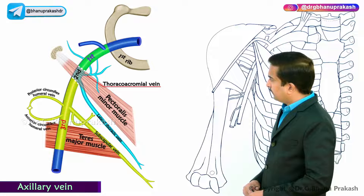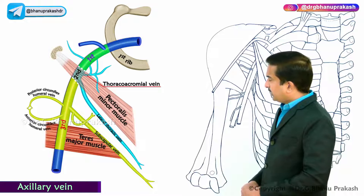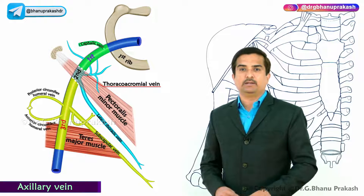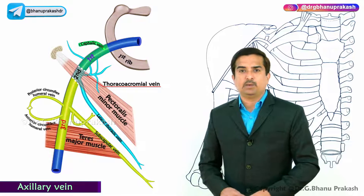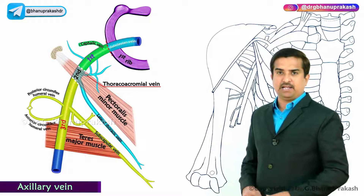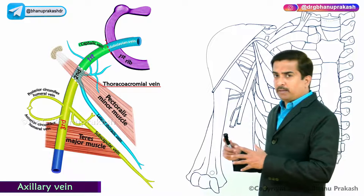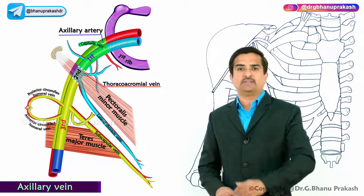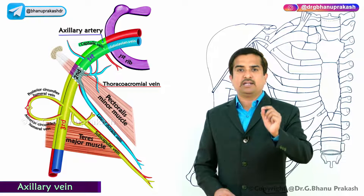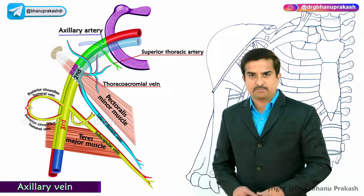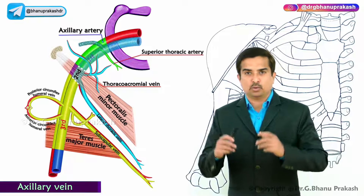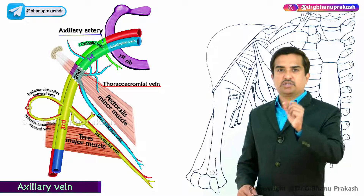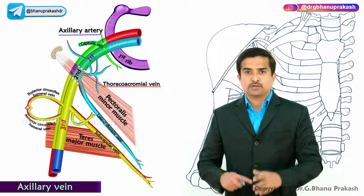The only tributary of the first part of the axillary vein is the cephalic vein, which joins the axillary vein at the outer border of the first rib to form the subclavian vein. This is the one exception where the tributary does not correspond with the branch of the axillary artery — the first part of the axillary artery gives off the superior thoracic artery, but there is no superior thoracic vein; instead, the cephalic vein drains into the axillary vein here.